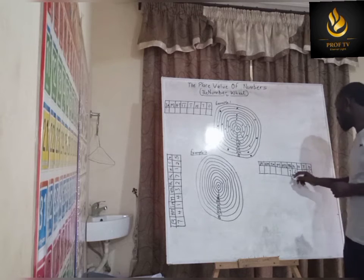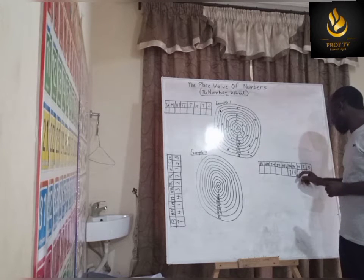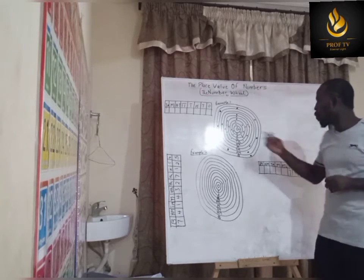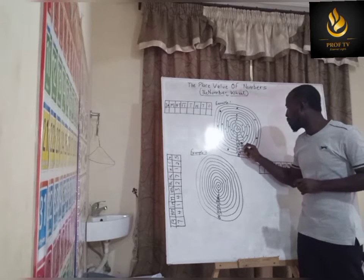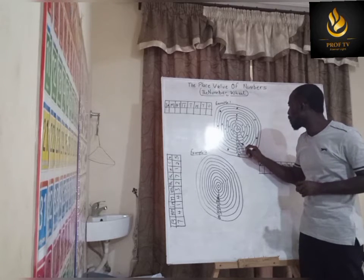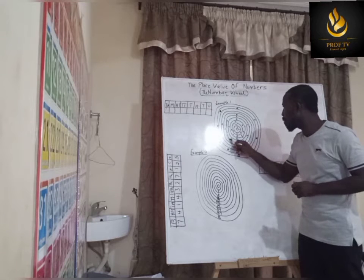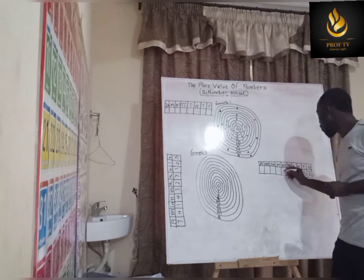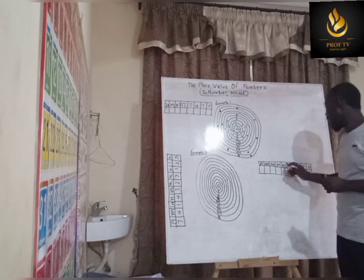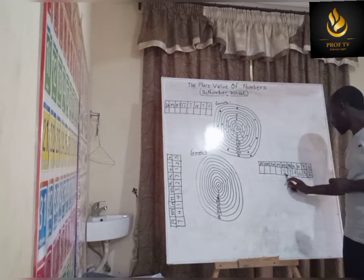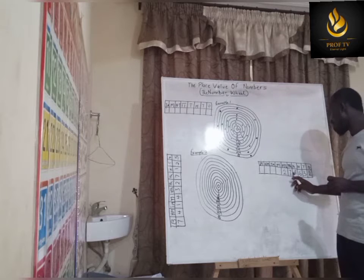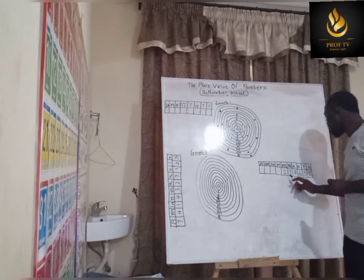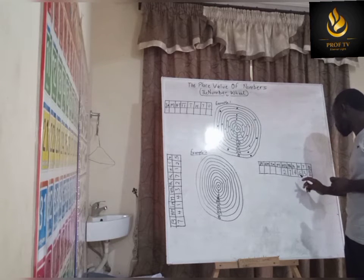Hello and welcome once again to Maths Made Easy. Today in our class we'll be looking at place values and we are also going to use the number rail to represent what we are going to discuss. I want you to join me today as we understand how to get our place values and also to understand how to apply the number rail. Without wasting much time, let's get to action.